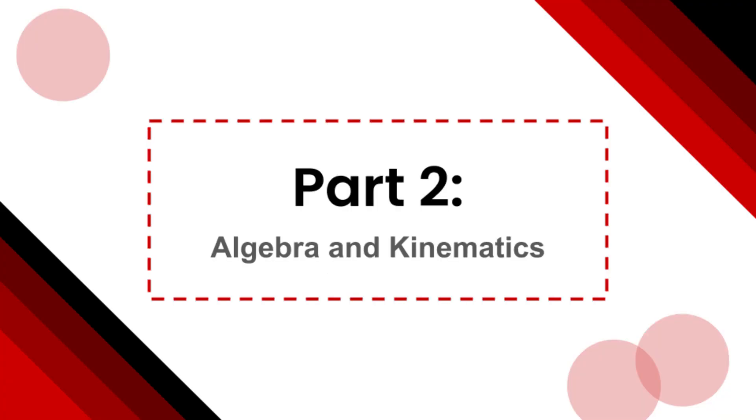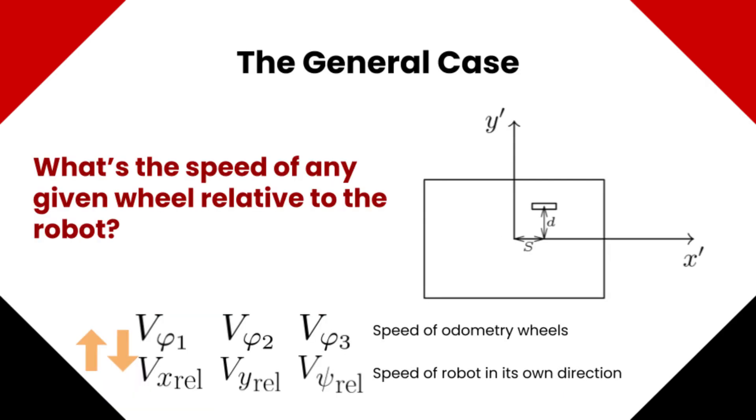Now is the important task, to find the mathematical relationship between wheel velocity and robot velocity. To do this, we can solve a system of linear equations. We first need to find the velocity of the point where the odometry wheel is located, in x' and y' coordinates.